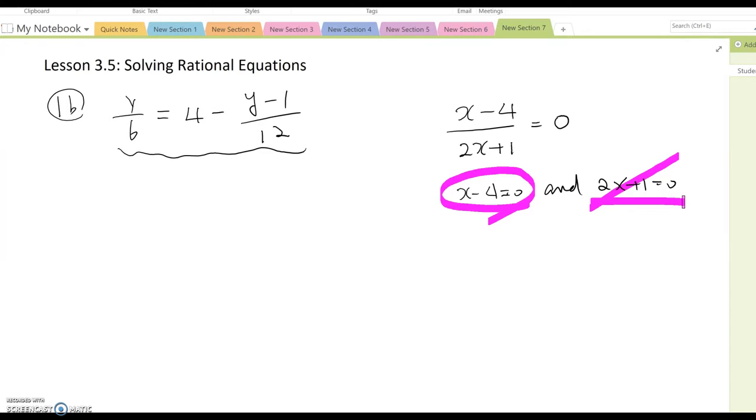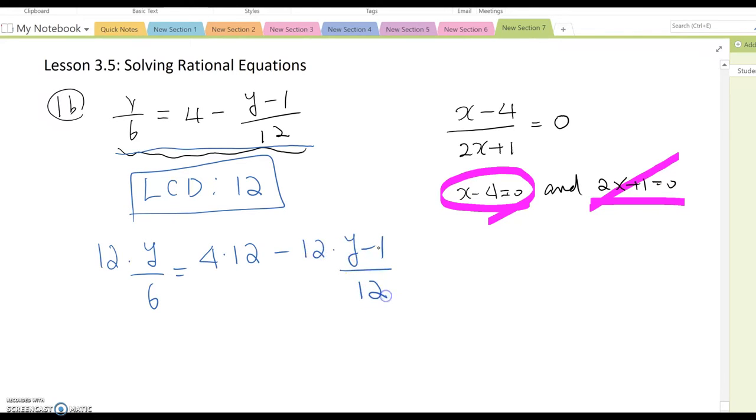In this case, finding the denominator, in other words, we can say multiplying the LCD to each fraction form. In this question, what is the LCD? 12, right? So you multiply 12 to each term.